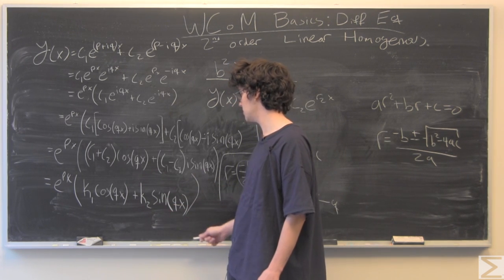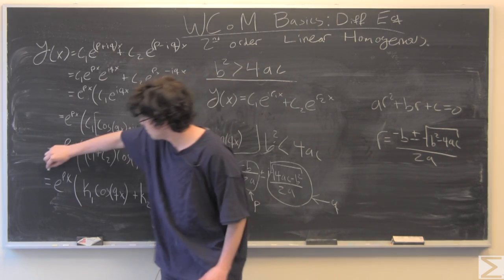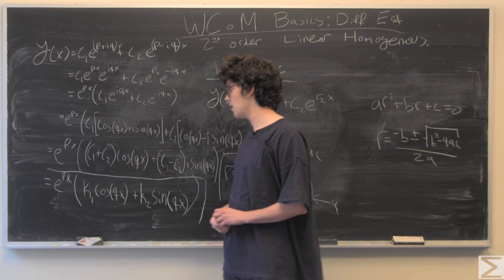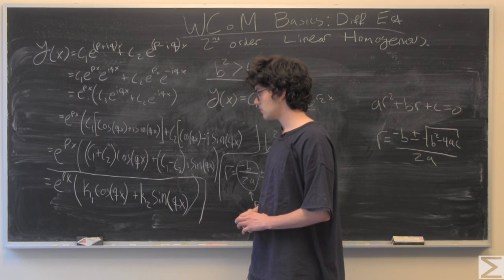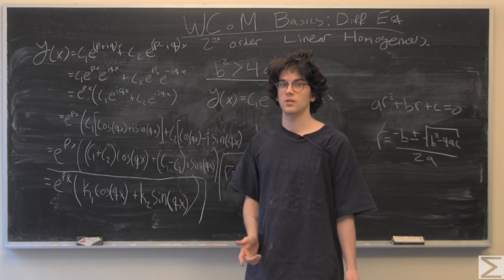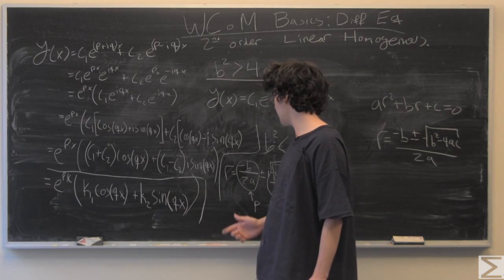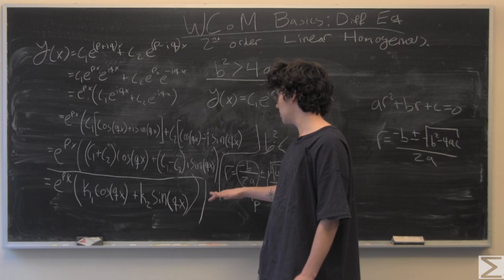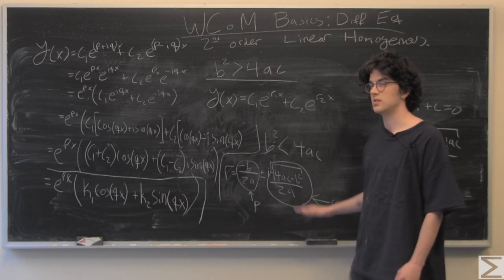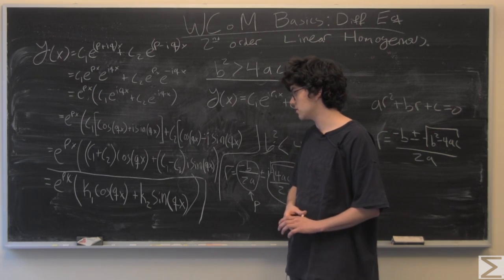The two coefficients that are multiplying the cosine and the sine will be absorbed into new constants. We'll call them k1 and k2. This is really what you need to remember. After a few times, you'll just memorize this formula and be able to recall it just like that. All you need to know is remember what p and q are, and you get those from solving the characteristic equation.